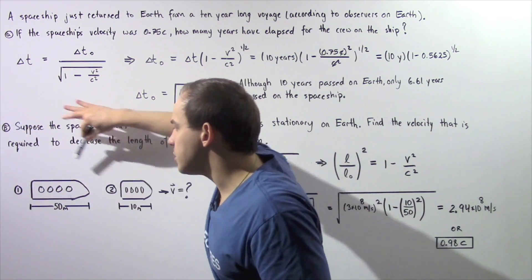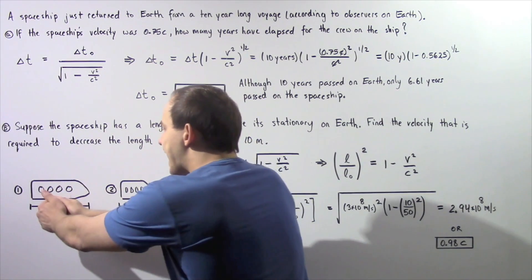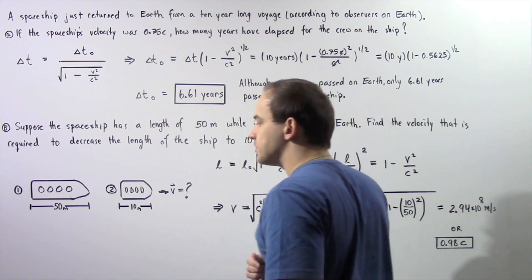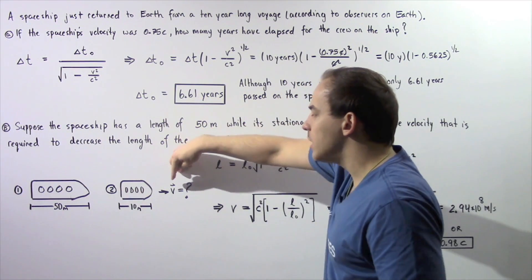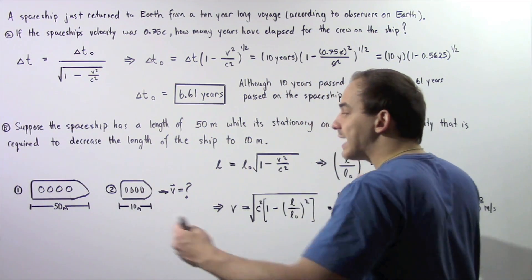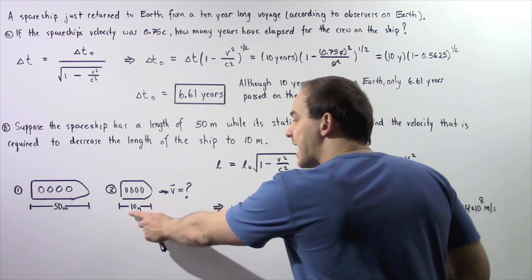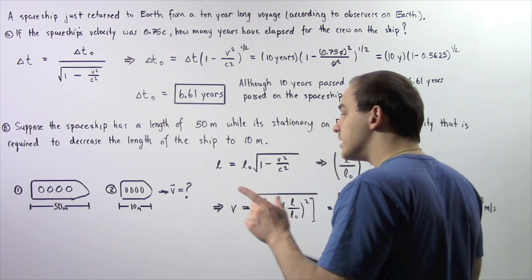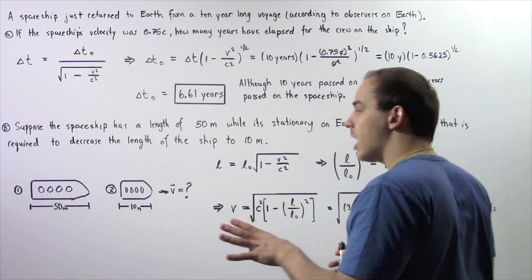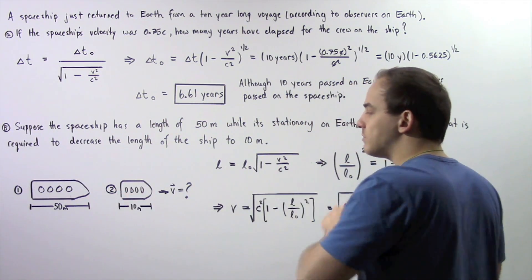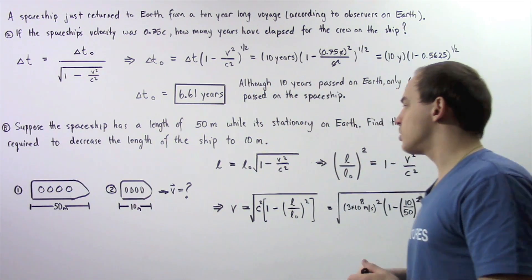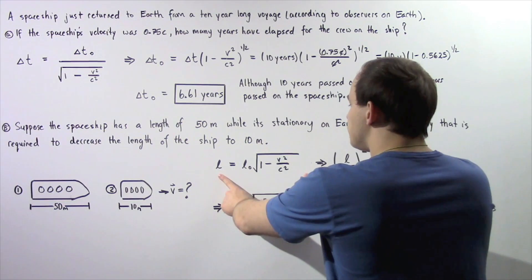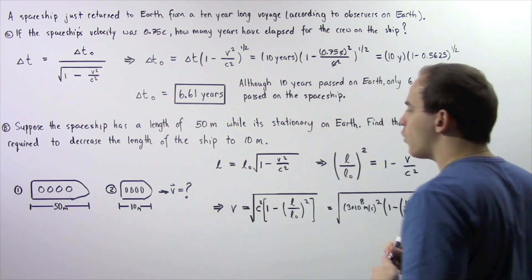When our spaceship is stationary, it has a length of 50 meters. When that spaceship is moving with some unknown velocity, that length contracts to 10 meters. We're assuming that the velocity of our spaceship is in the same direction as the length of that spaceship. We want to apply the length contraction equation.